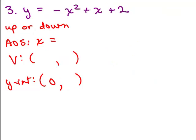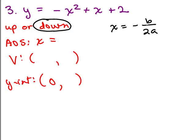How about this one? y equals negative x squared plus x plus 2. The coefficient of x squared is negative, so this one opens down. This is not in the form where it's easy to tell what the axis of symmetry is, so let's use the formula x equals negative b over 2a. The coefficient of x is 1, so b equals 1, and a, the coefficient of x squared, is negative 1. That gives us 1 half, so the axis of symmetry is the line x equals 1 half.